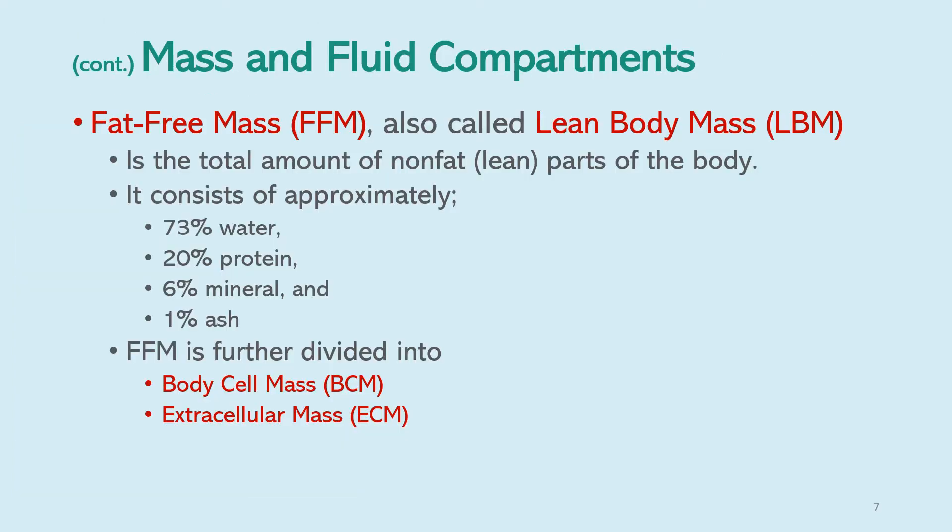Besides fat mass, we also have fat-free mass, also called lean body mass. Fat-free mass is the total amount of non-fat or lean parts of the body. It consists of approximately 73% water, 20% protein, 6% mineral, and around 1% ash. Fat-free mass is further divided into body cell mass and extracellular mass.